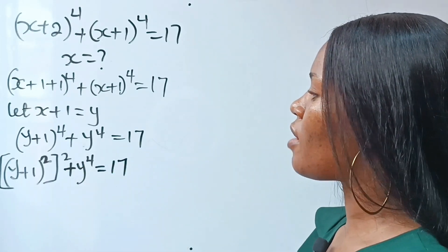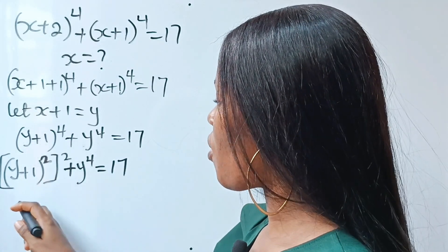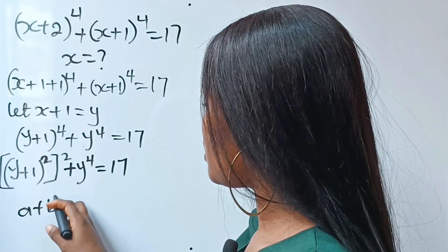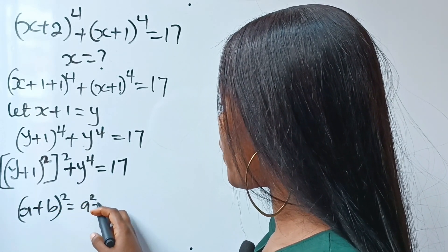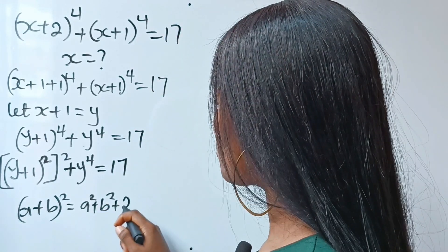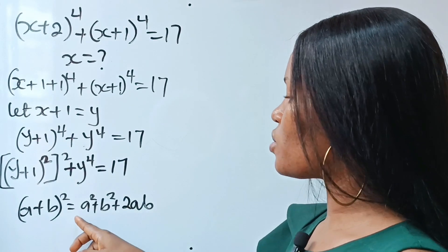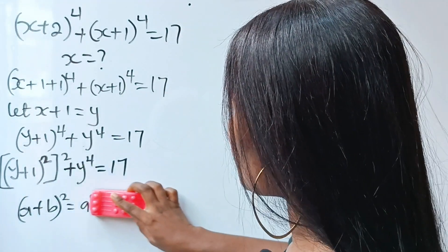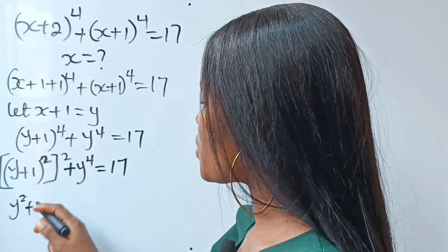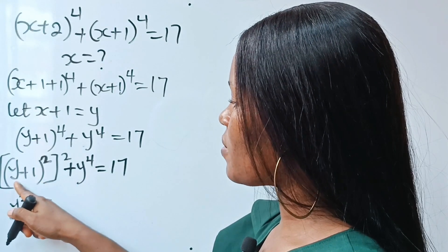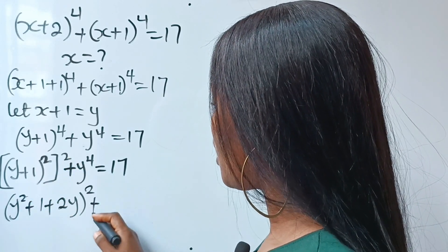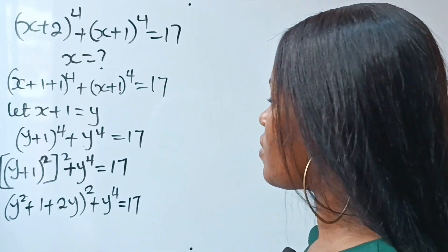Now we apply the algebraic identity: a plus b raised to the power of 2 equals a squared plus b squared plus 2ab. So y plus 1 squared becomes y squared plus 1 squared plus 2 times y times 1, which gives us y squared plus 1 plus 2y, all raised to the power of 2, plus y to the power of 4 is equal to 17.